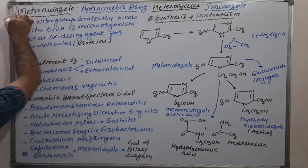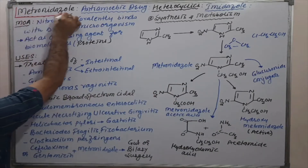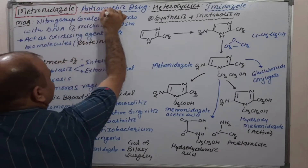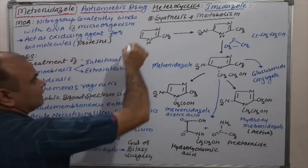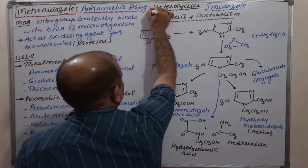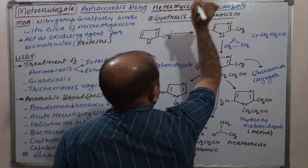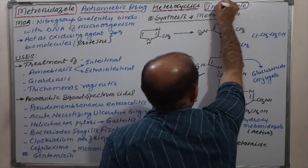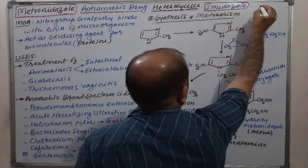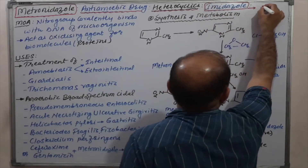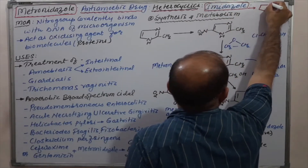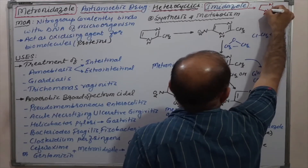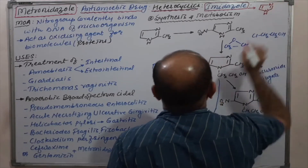Metronidazole belongs to the anti-amebic drug category. It is heterocyclic in nature and specifically it is an imidazole derivative. Imidazole is a five-membered ring containing two nitrogen atoms at the 1 and 3 positions, known as imidazole.